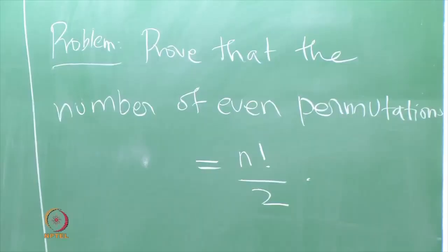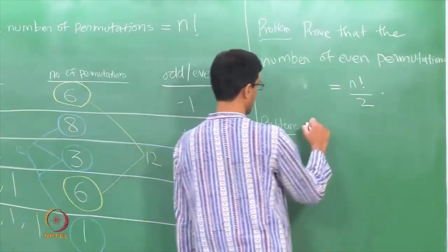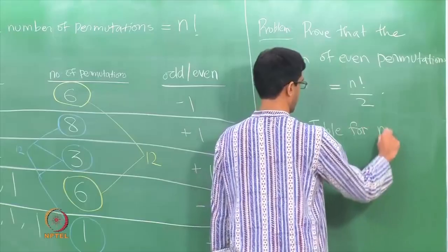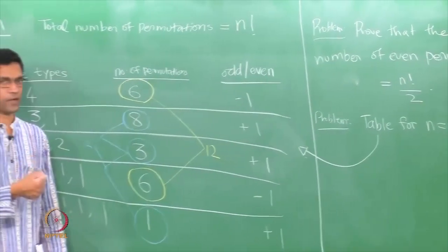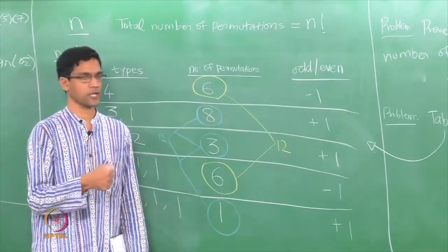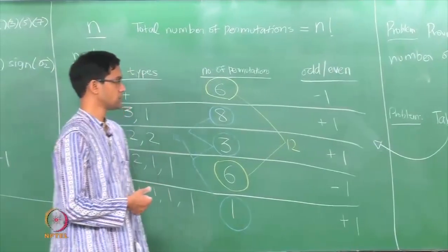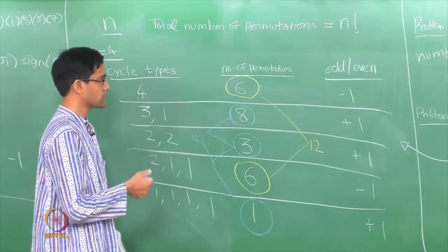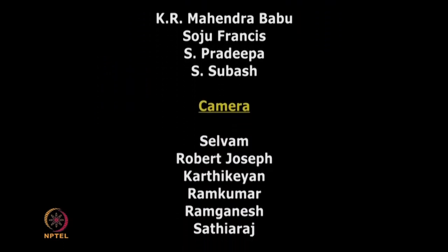As exercises: first, prove that the number of even permutations equals n factorial divided by 2 in general. Second, work out the same cycle-structure table for n equals 5, determine the sign of each cycle type, and verify that exactly 60 out of 120 permutations are even and 60 are odd. Next time we will talk a little bit more about permutations. Thank you.